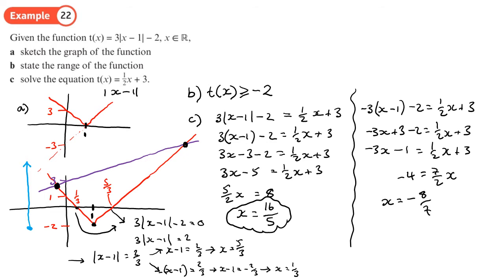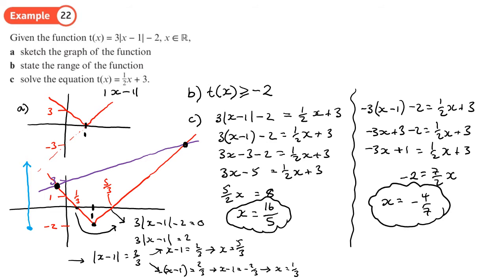Sorry — correction: +3 - 2 is actually +1, not -1. So -3x + 1 = ½x + 3. Subtracting 1 from both sides gives (7/2)x = -2, so x = -2 ÷ (7/2) = -4/7. Sorry about that. So the two x-values where the lines cross are x = 16/5 and x = -4/7.